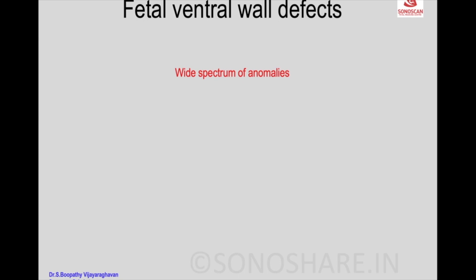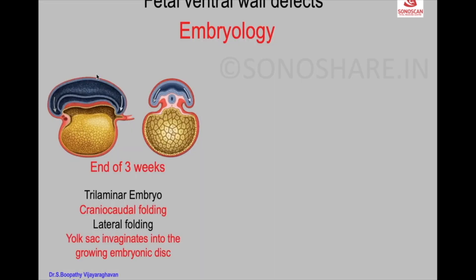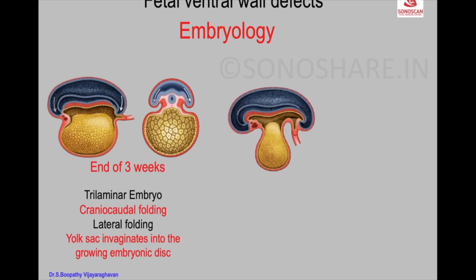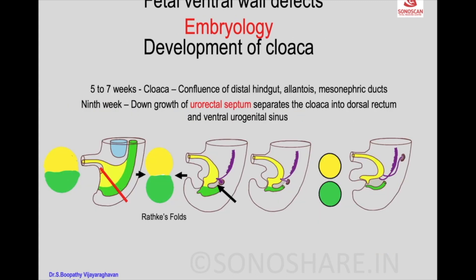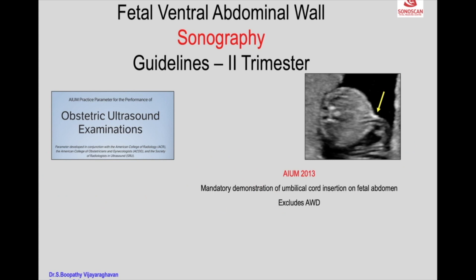There is a wide spectrum of anomalies. Embryology involves cephalocaudal folding and lateral folding, with invagination of the yolk sac into the embryonic disc, physiological herniation of bowel, and return of bowel through the anterior abdominal wall. The urogenital sinus, dorsal hindgut, and urogenital development are also relevant.